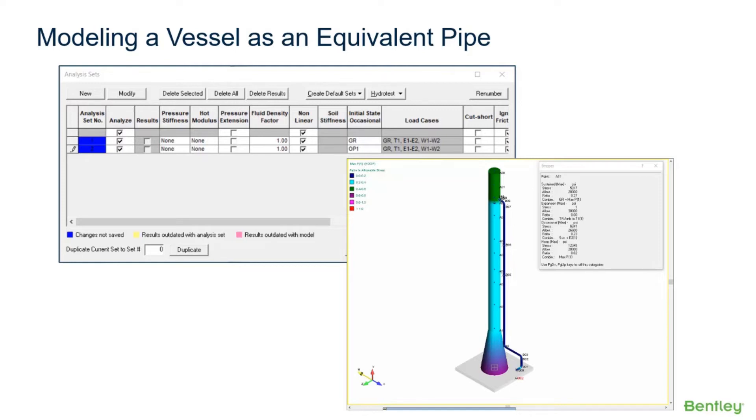It's important to remember that AutoPIPE cannot be used to check the stresses in the piping that is modeled to represent the vessel, even though results will be shown throughout that piping. You'll need to use the ASME code separately or AutoPIPE Vessel to check the stresses in the vessel itself.